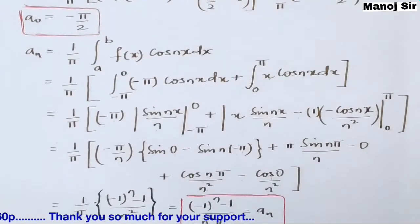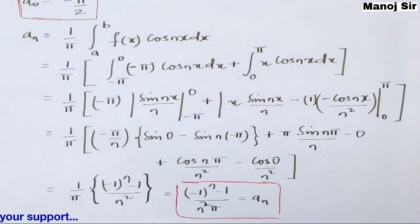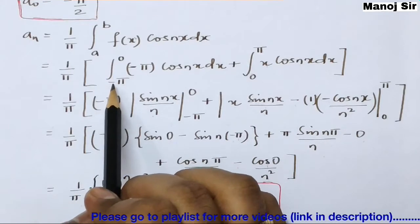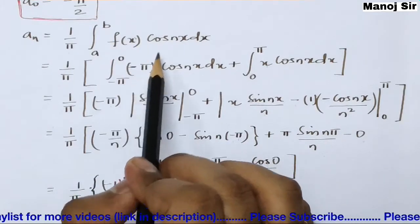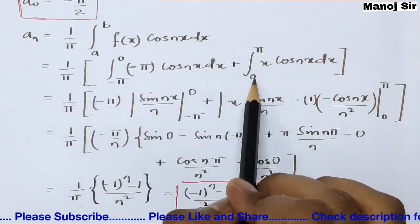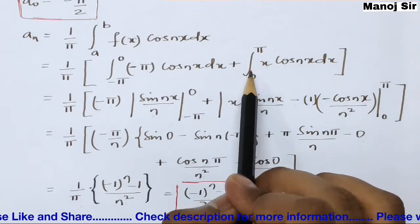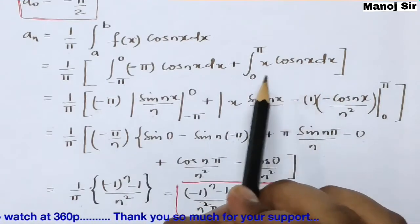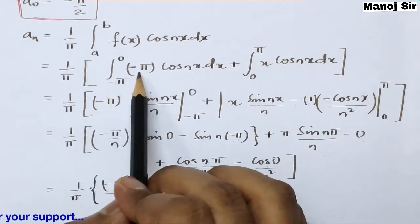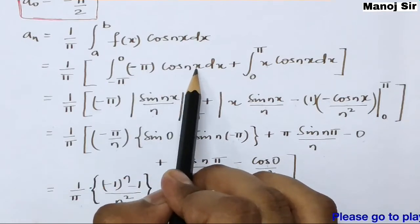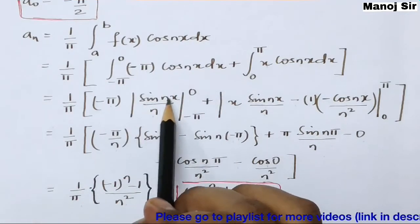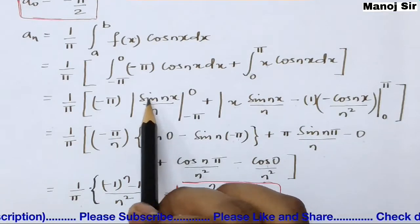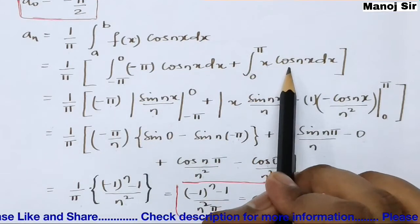Now find aₙ: aₙ = (1/π) ∫_a^b f(x) cos(nx) dx. Splitting: aₙ = (1/π) [∫_{-π}^{0} (-π) cos(nx) dx + ∫_{0}^{π} x cos(nx) dx].